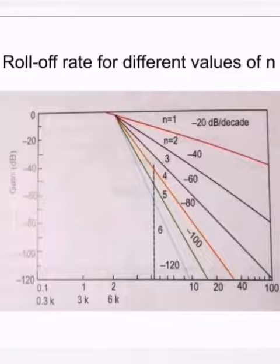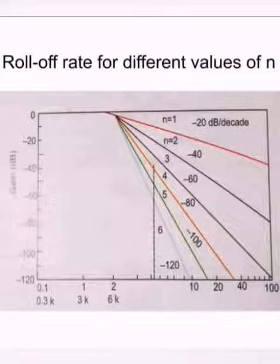From the preceding discussion of filters, we can conclude that in the stop band the gain of the filter changes at the rate of 20 dB per decade for first order filter or for n equal to 1, and at 40 dB per decade for second order filters.